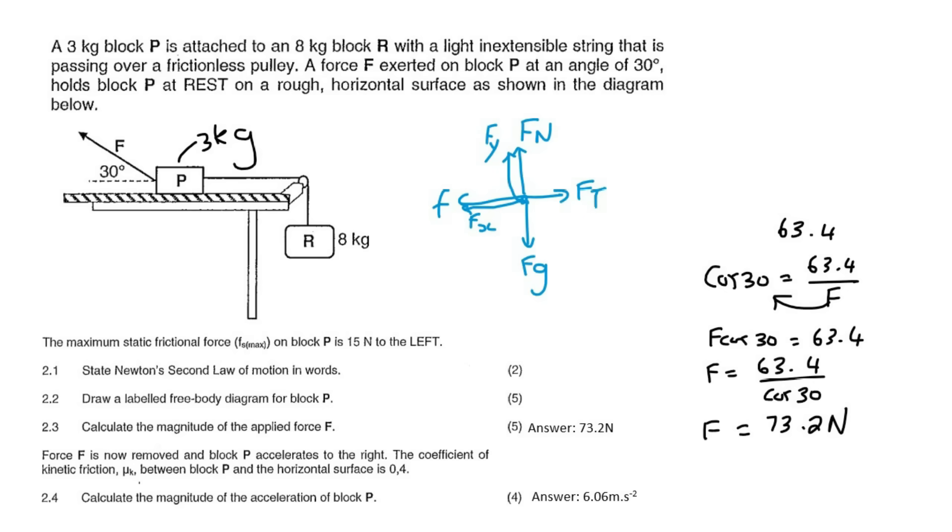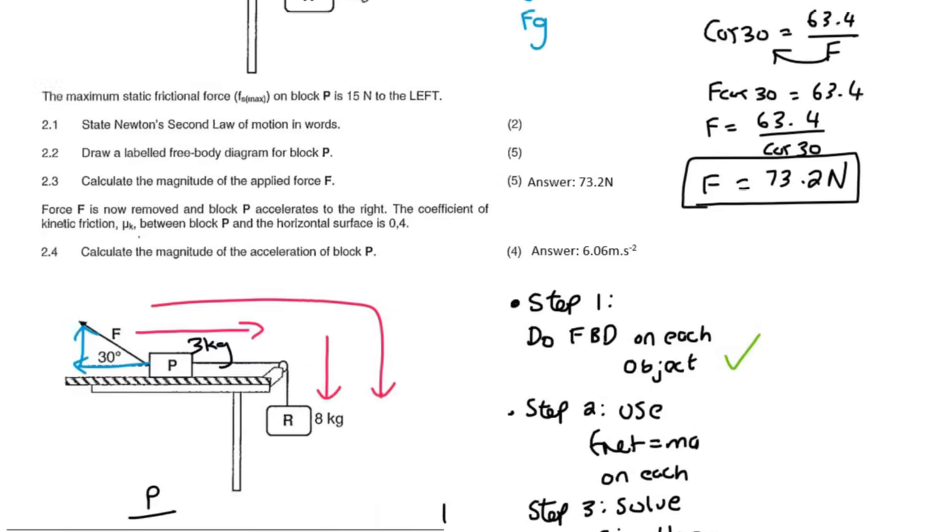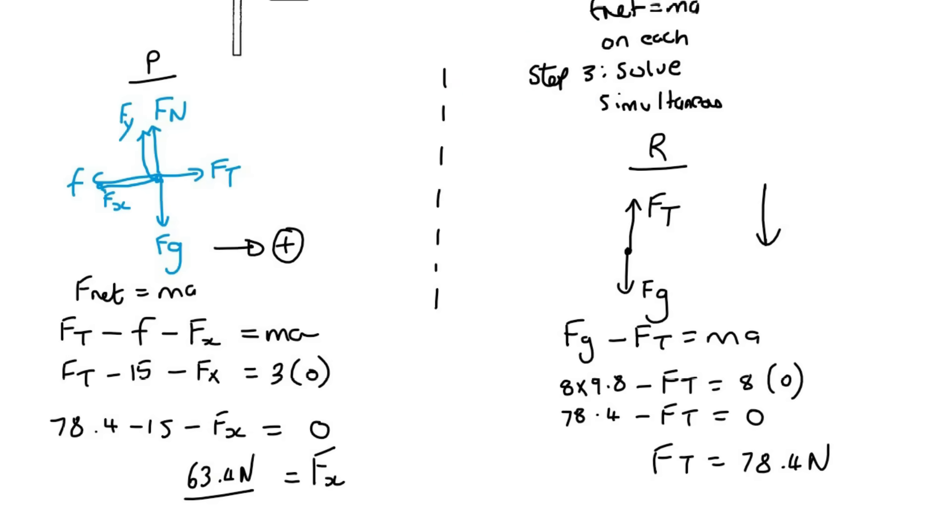Moving on to the last one, they say that the force F is now removed, and block P accelerates to the right. The coefficient of friction is 0.4. Calculate the acceleration. Now, guys, you've got to be careful. What some of you sometimes want to do is you would go down to our earlier calculation where we calculated the tension force, and you'll say, oh, look at that. I've got tension. So I'll just use that in my next calculation. Guys, that is completely incorrect. Remember that when we solved these two, we were solving it under the assumption that there was no acceleration. But now that there is going to be acceleration, the tension forces are going to change. So we have to restart. We cannot use that value.